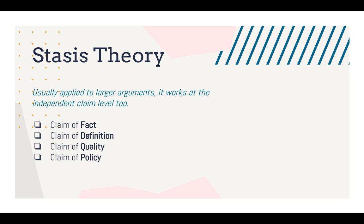Every claim is, in fact, one of either fact, definition, quality, or policy — not just an entire argument, but at the claim level. For example: 'Climate change is real, it's happening' — that is a claim of fact. 'Climate change manifests itself as extremes in weather conditions' — that's a claim of definition. A claim of quality would be an evaluation, like 'This is the biggest problem of our time.' And a claim of policy would be something like 'We need to reduce our carbon footprint' — a call to action.